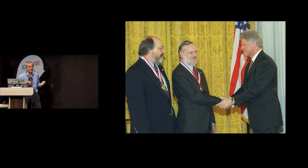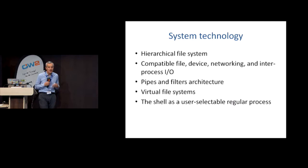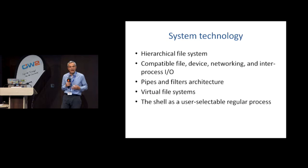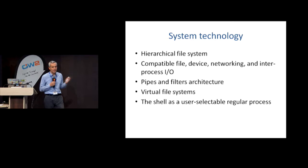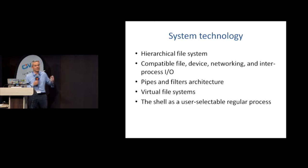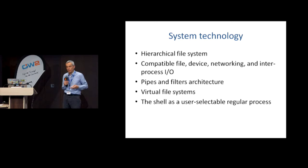As recognition for these achievements, the two key developers behind it received the President's Medal, quite an honor in the United States. In terms of system technology, Unix popularized things like a hierarchical file system — IBM's system at the time gave you several virtual disks where you can store things, not a hierarchy. It also brought compatible input/output for files, devices, networking, and in-process I/O; the pipes and filters architecture; virtual file systems; and the shell as a user-selectable process — not something given to you by the operating system, but something you can build and select, which has spurred innovation.